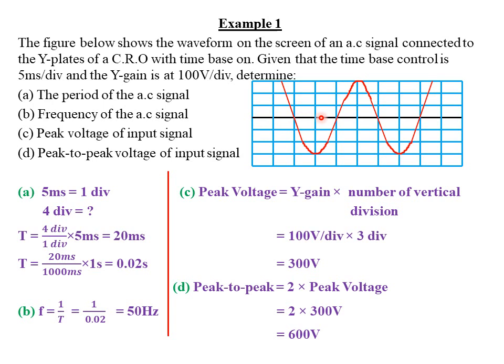We count vertical divisions from the zero voltage line — the mean line — to the peak. A peak can be either a crest or a trough measured from the zero volt line. From the zero volt line to the peak, we have one, two, three divisions. Similarly, from the zero volt line to the trough, we have one, two, three divisions. With three divisions and Y gain of 100 volts per division, peak voltage equals 300 volts.